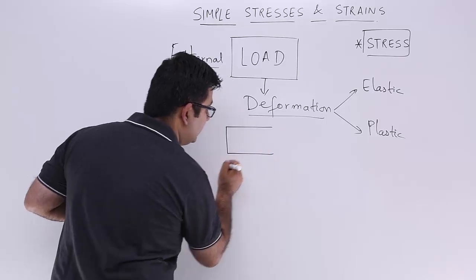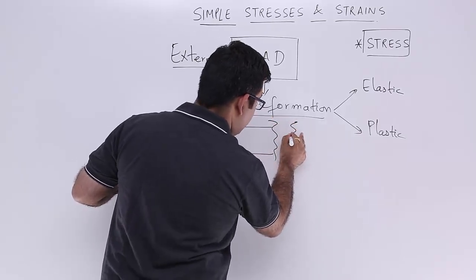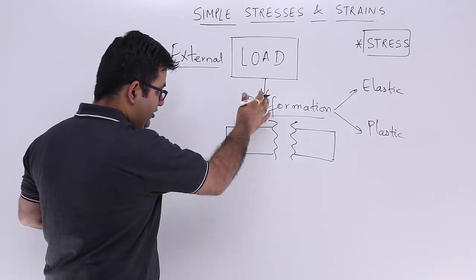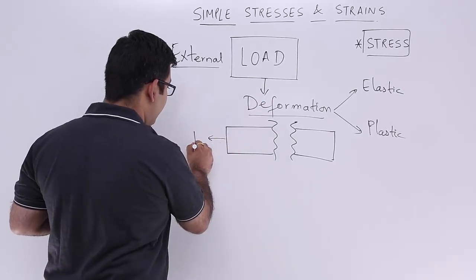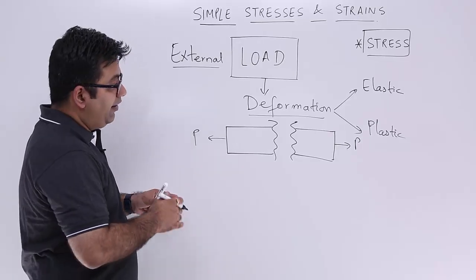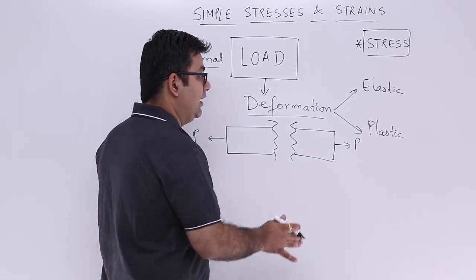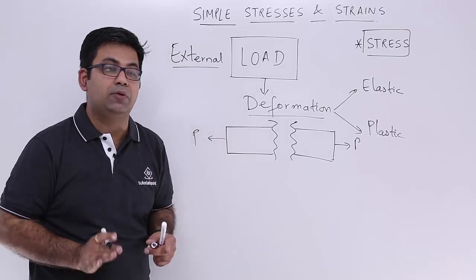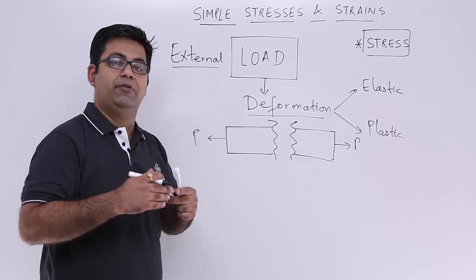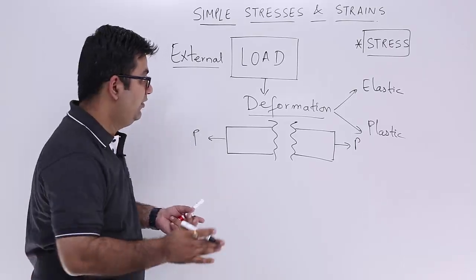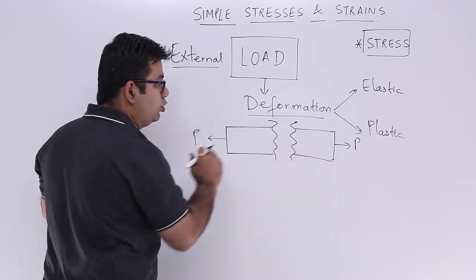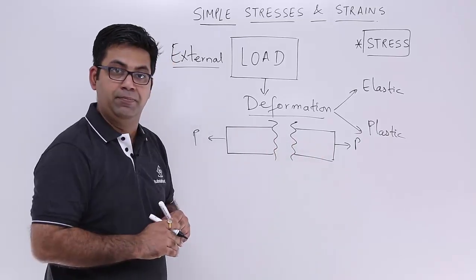Let's look at this in a diagrammatical fashion and then write down the mathematical relation. Let us say this is one section of the body and this is the other section — we've just cut the body in half. Let us say we have an external load P acting at two ends of this body. The deformation can be of the shape, and we'll go into those details one by one.